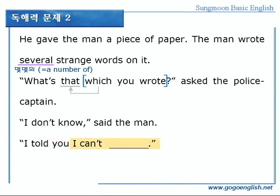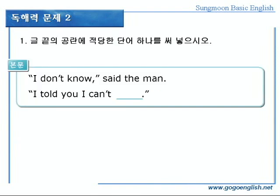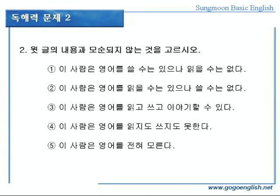여기서 which는 관계대명사의 목적격으로 앞에 선행사 that을 수식하고 있네요. 'I don't know,' 몰라요, said the man, 그 남자가 말했다. 'I told you,' 내가 당신에게 말했잖아요. 'I can't blank,' 나는 blank할 수 없다고. 자, 그럼 문제를 풀어볼까요? 1번. 글 끝의 공란에 적당한 단어를 하나 써넣어라. 쓸 줄은 알지만 그 남자가 읽지 못한다고 했으니까 답은 read가 됩니다. 2번. 윗글의 내용과 모순되지 않는 것을 고르시오. 즉, 내용과 일치하는 것을 찾으라는 말이네요. 1번, 이 사람은 영어를 쓸 수는 있으나 읽을 수는 없다. 그가 쓴 것은 영어가 아니죠? 2번, 이 사람은 영어를 읽을 수는 있으나 쓸 수는 없다. 역시 아닙니다. 3번, 이 사람은 영어를 읽고 쓰고 이야기할 수 있다. 말은 조금 해도 읽고 쓰지는 못합니다. 4번, 이 사람은 영어를 읽지도 쓰지도 못한다. 사실은 이것이 맞죠? 정답은 4번이 되겠습니다. 5번, 이 사람은 영어를 전혀 모른다. 말은 조금 하니까 전혀 모르는 것은 아닙니다. 속임수가 있는 문제였군요.